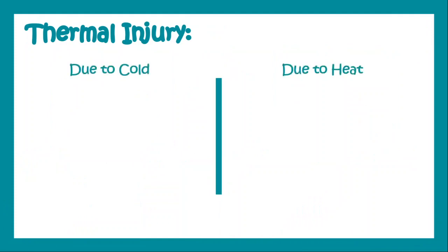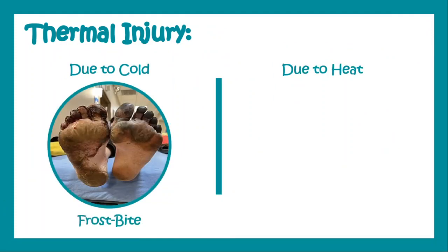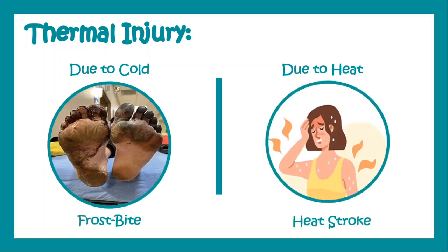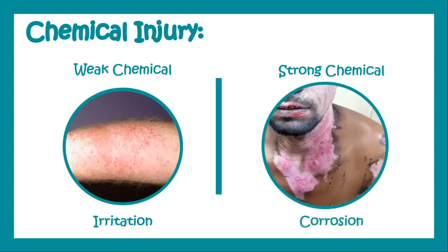Thermal injury can be due to cold or due to heat. Due to cold, you can get different injuries including frostbite, and due to heat, you can get heat stroke, for example. Chemical injury can be due to a weak chemical, which causes irritation, or a strong chemical, which causes corrosion.